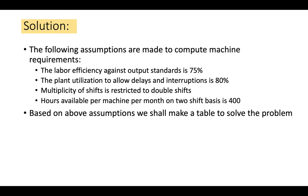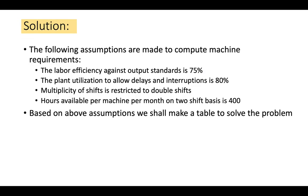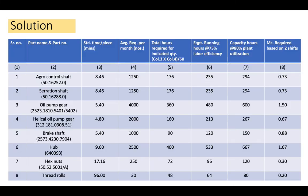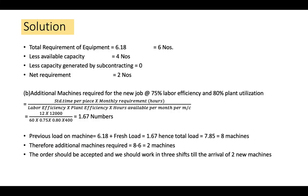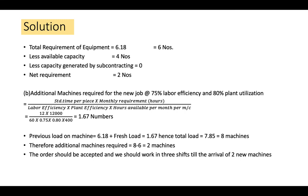The assumptions made are: labor efficiency against output standard is 75%, plant utilization to allow delays and interruptions is 80%, multiplicity of shift is restricted to double shift only, and hours available per machine per month on a 2-shift basis is 400. Using these, a table is constructed where the indicated capacity equals standard time per piece multiplied by average quantity per month. Equipment running hours at 75% labor efficiency and 80% plant efficiency give effective hours. Total equipment requirement comes to 6.18, rounded to 6. With 4 available, the net additional requirement is 2 machines.